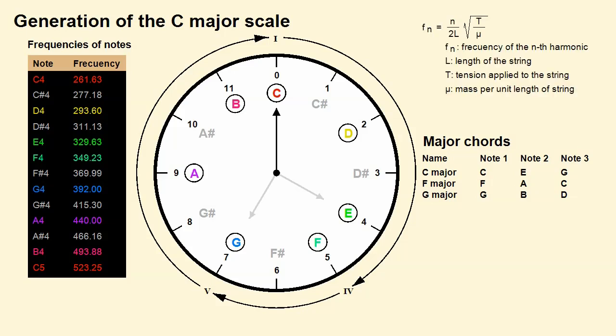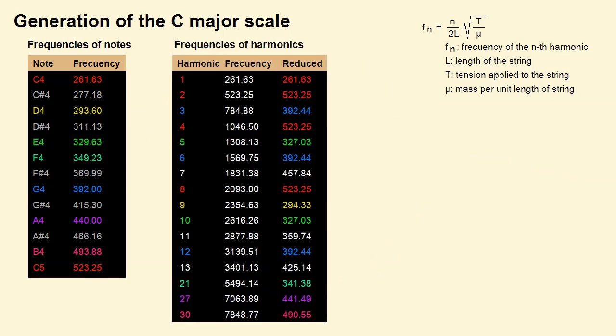In the video Harmonics on Vibrating String, whose link is given in the description, it was indicated that the frequencies of vibration of a string are given by the formula shown above right. To the right of the table of frequencies of the chromatic scale is a table indicating the frequencies of the harmonics of the vibrating string for the fundamental frequency of 261.63 Hz, corresponding to C4.